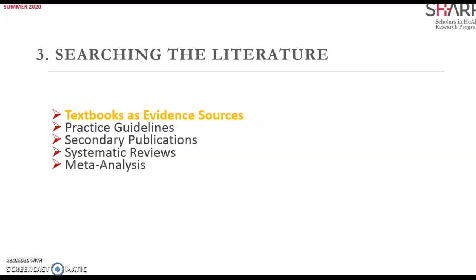Textbooks are one source. For example, streptokinase decreases mortality in patients with acute myocardial infarction — 33 trials done from 1955 through 1988 favored the treatment. Yet in 1983, only a third of textbooks even mentioned thrombolytic therapy. That illustrates how reliable textbooks are as evidence.